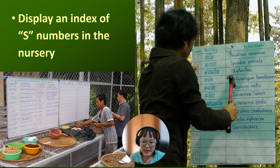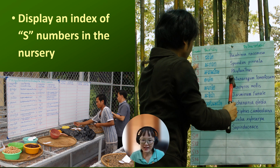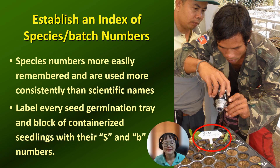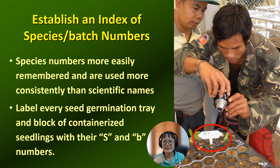On the right-hand side is also an example of a board that has been established. You see the S number, and the middle column is the local name written in Thai, and the right-hand side is the species name. Using a number is more easily remembered in comparison to a long scientific species name.